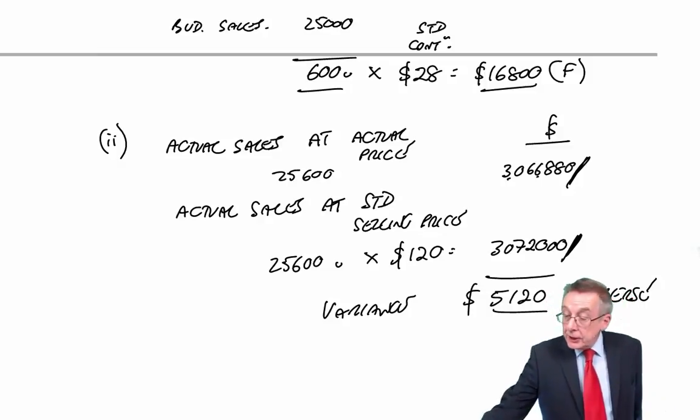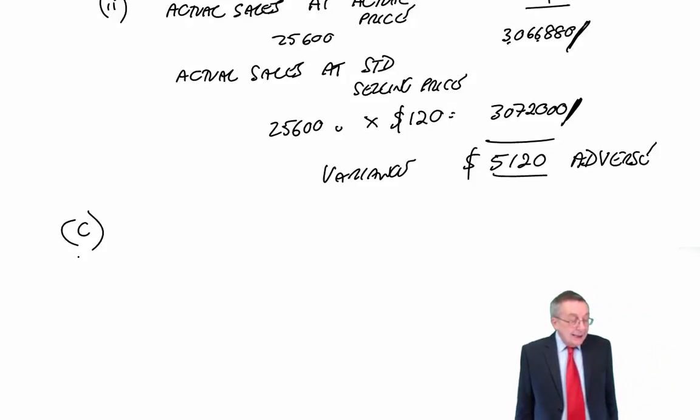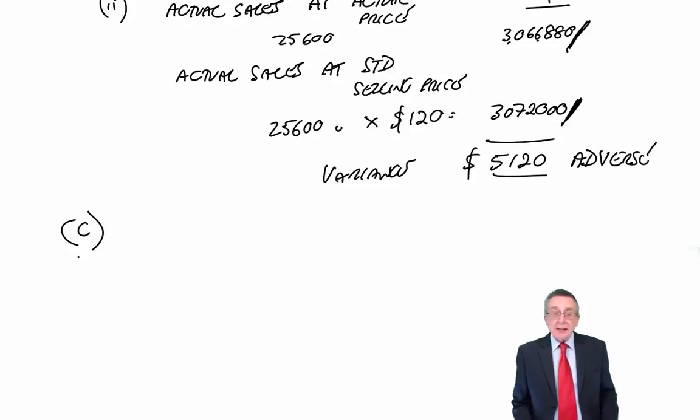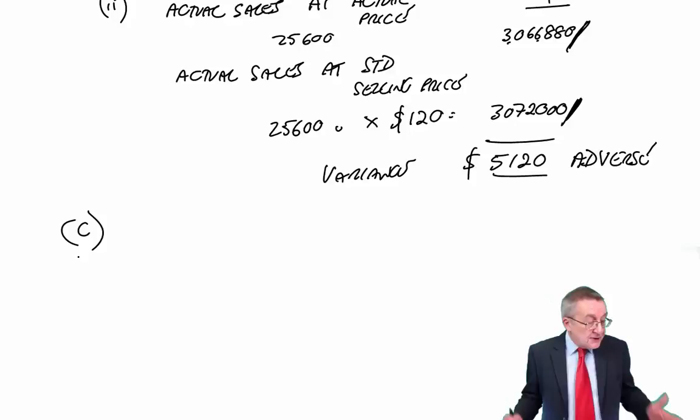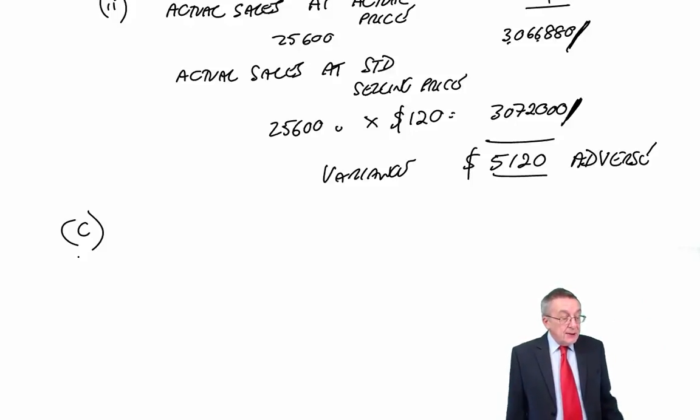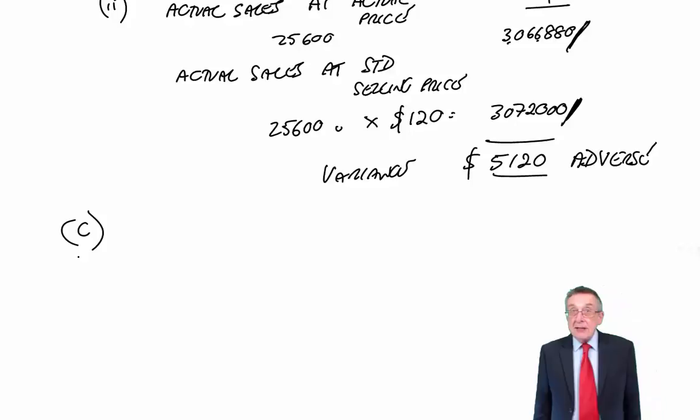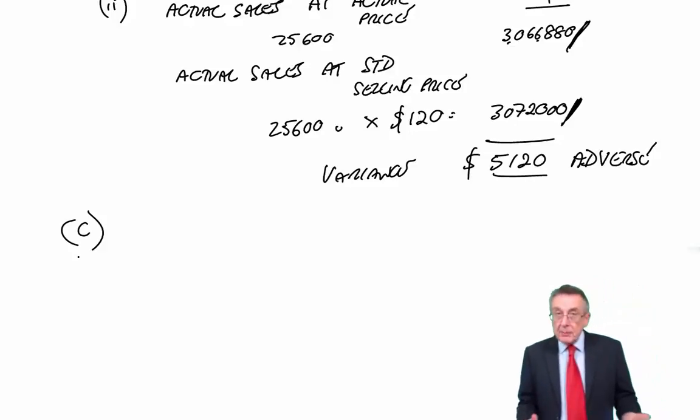All right, finally, and then we've finished question two. Part C. And again, the bits are not related. It wouldn't be fair for you to lose marks twice for the same mistake. Whether you got A right or wrong, whether you got B right or wrong, C stands on its own. Castilda's management accountant thinks that the direct labour rate and efficiency variances for month one could be interrelated.